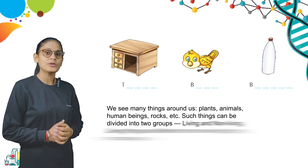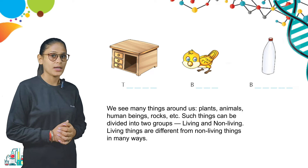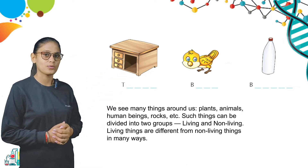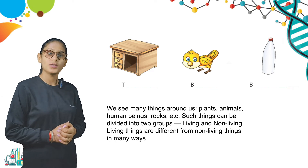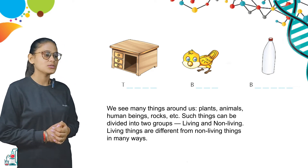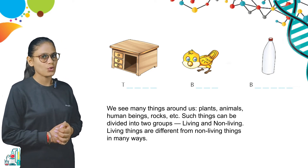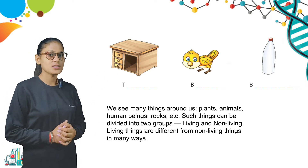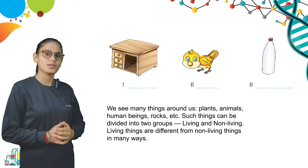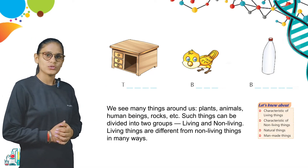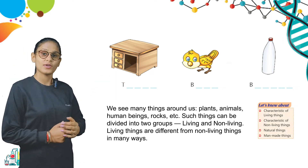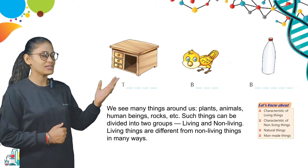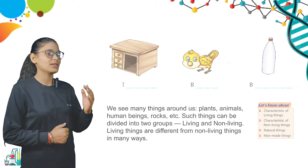Now we read our chapter. We see many things around us — plants, animals, human beings, rocks, etc. Such things can be divided into two groups: Living and Non-Living. Living things are different from non-living things. Let us learn about the characteristics of living things, characteristics of non-living things, natural things, and man-made things.